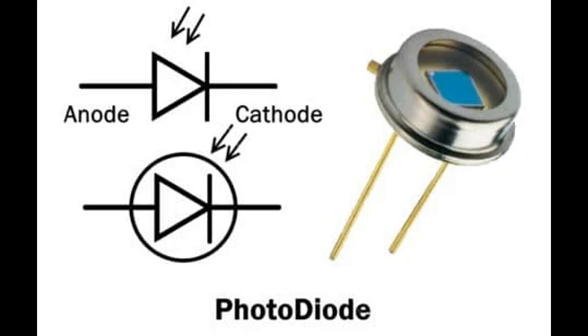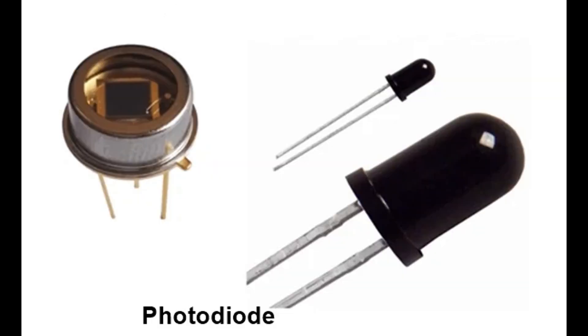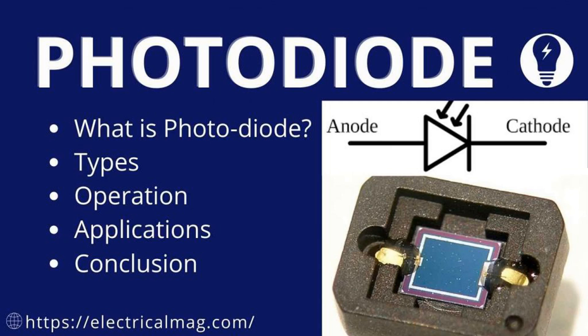Automotive applications: Photodiodes are used in LiDAR (light detection and ranging) systems for autonomous vehicles, measuring distances by detecting reflected laser light. Rain sensors detect rain on windshields by sensing changes in light transmission, enabling automatic windshield wiper activation. In renewable energy, photodiodes are used in some solar panels to measure the intensity and efficiency of solar energy conversion. In LiFi systems, photodiodes receive light signals to transmit data, offering an alternative to Wi-Fi.